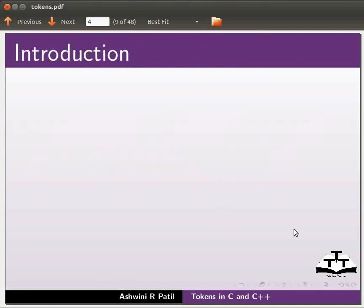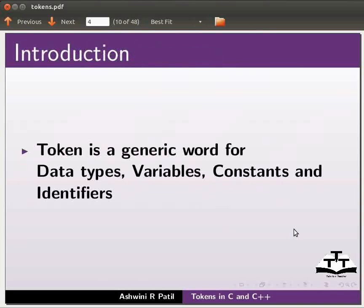Let us start with an introduction. Token is a generic word for data types, variables, constants and identifiers.